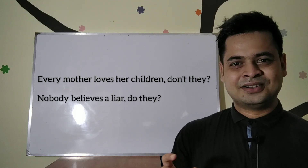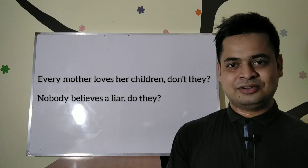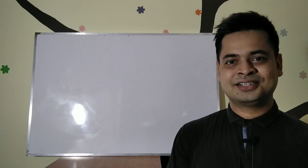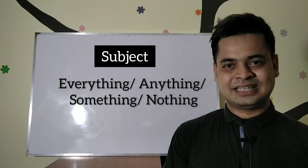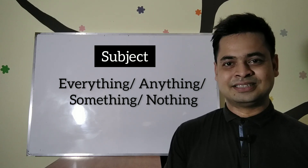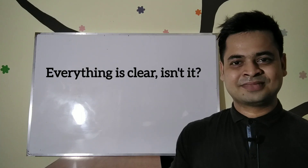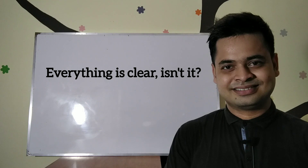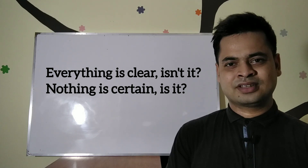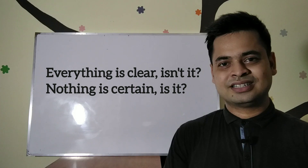In 'Nobody believes a liar, do they?' — we write 'do' because 'they' is plural and we cannot write 'does' after 'they.' When 'everything,' 'anything,' 'something,' or 'nothing' is the subject of a statement, we use 'it' as the pronoun in the fragment. For example: 'Everything is clear, is it?' and 'Nothing is certain, is it?' — here 'it' is the pronoun for 'everything' and 'nothing.'